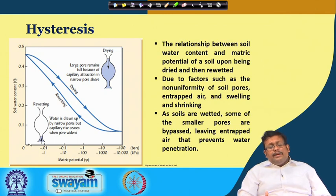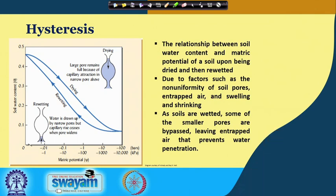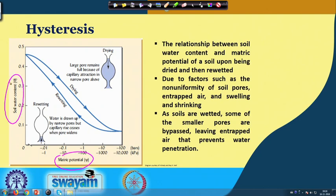Another important term is hysteresis. Hysteresis is the relationship between soil water content and matric potential of a soil upon being dried and then rewetted. The relationship between matric potential and soil water content when drying the soil is not similar for the same soil when rewetting it. This difference occurs because of several factors: non-uniformity of soil pores, entrapped air, and swelling and shrinking properties of the soil.